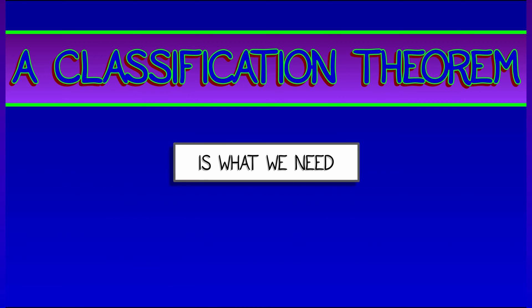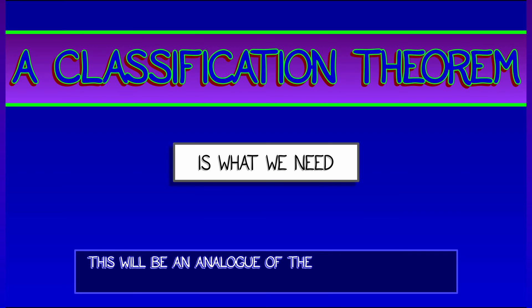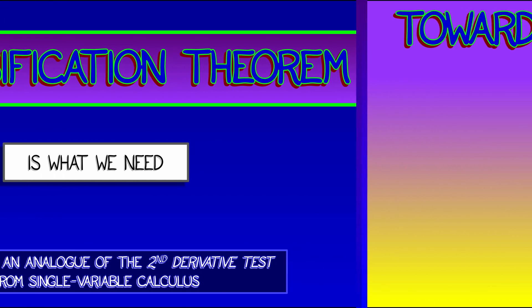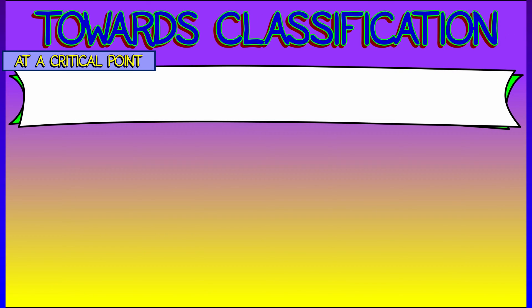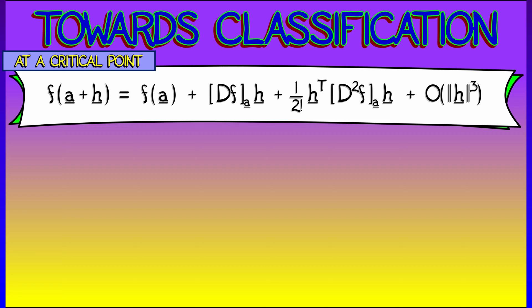We need a classification theorem in order to be able to say what type of critical point we have. We're going to present something that is like the second derivative test from single variable calculus. In order to do that classification, we're going to take a critical point and perturb off of it a little bit by some amount h vector. We're going to Taylor expand and use what we know about the Taylor series.